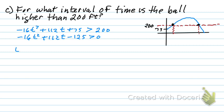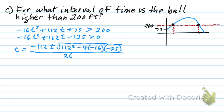So I've got T equals negative 112 plus or minus the square root of 112 squared minus 4AC. All of that's being divided by 2 times A which is negative 16. Let's take a minute and see what we get.